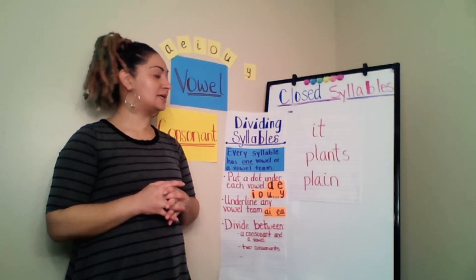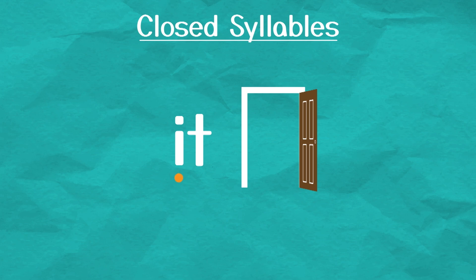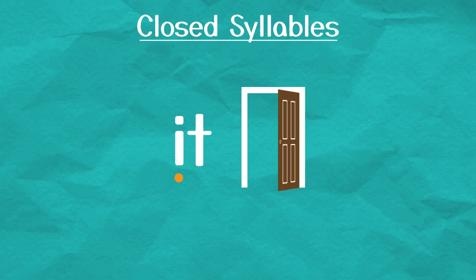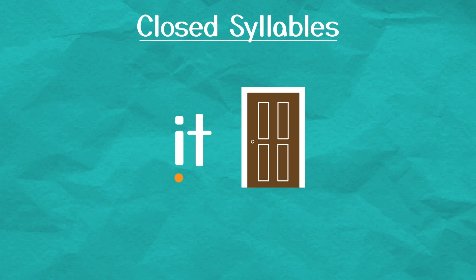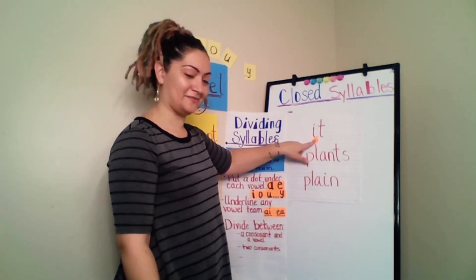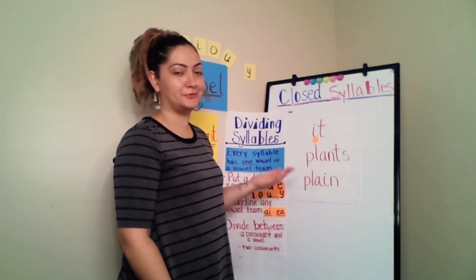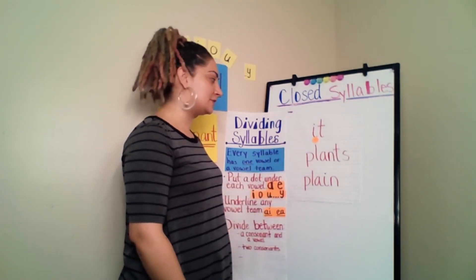Let's look at some simpler words. I notice that this word has one vowel, so I'm going to put a dot under it. I notice that there is a consonant after the vowel, making this syllable a closed syllable. That makes the I say its short sound. So we have the word — it. Yeah, I knew you knew that word. We're just practicing our strategy.